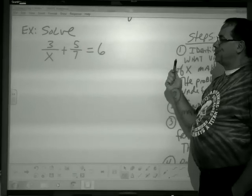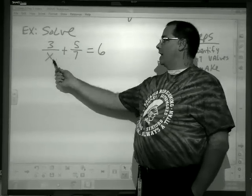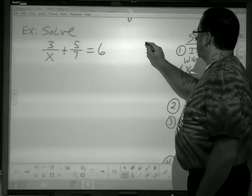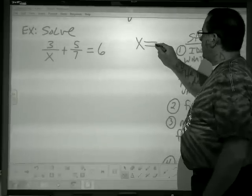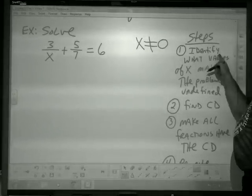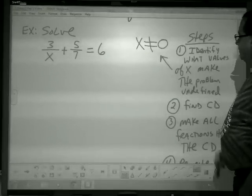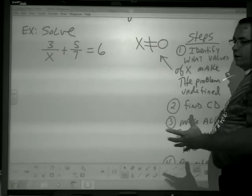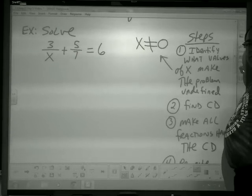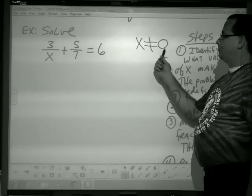If you remember from the first day of Chapter 2, we said that we can't have 0 here. And luckily, this is just x. So the only value of x that would make this bottom 0 is if x was equal to 0. So we say x cannot equal 0. So identify what values of x make the problem undefined. We've got to make sure x is not equal to 0 at the end.